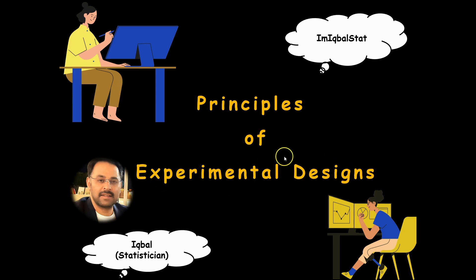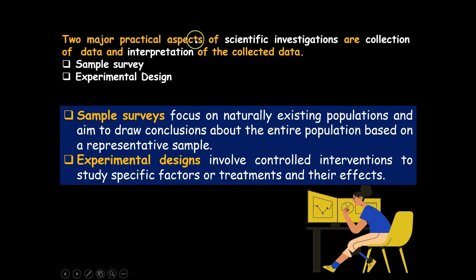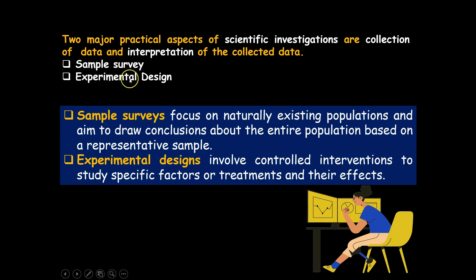Two major practical aspects of scientific investigation are collection of data and interpretation of collected data. There are two ways we can gather this information: either we can go for sample surveys or we can perform an experimental design. Sample surveys are focused on naturally existing populations, aiming to draw conclusions about the entire population based on a representative sample. Experimental designs involve controlled interventions to study specific factors or treatments and their effects.